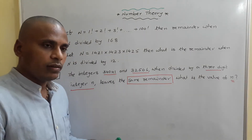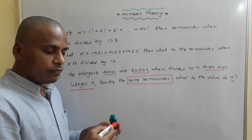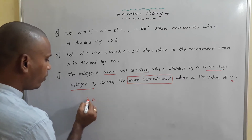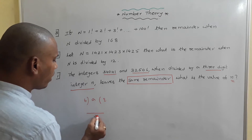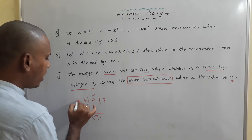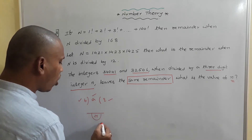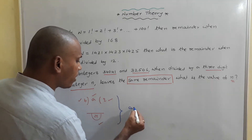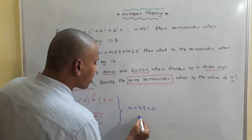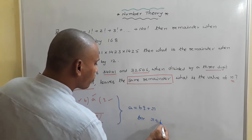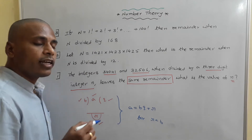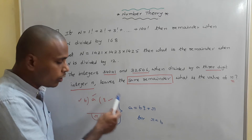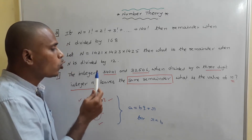I think you are all familiar with the statement of division algorithm. Division algorithm means when you divide a number a with another number b, there exist q and a certain remainder r. We call a as dividend, b as divisor, q as quotient, and r as remainder. We express this division as a statement: a = bq + r, where the remainder r is less than the divisor. So the statement of division algorithm is: dividend a equals divisor b times quotient q plus remainder r.